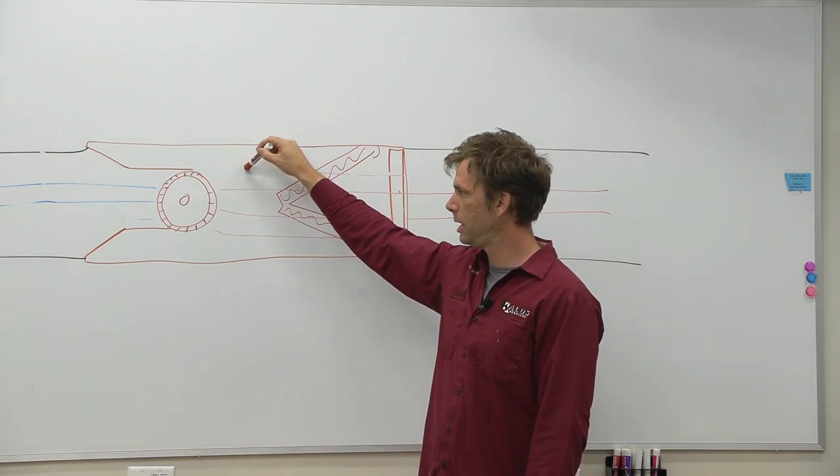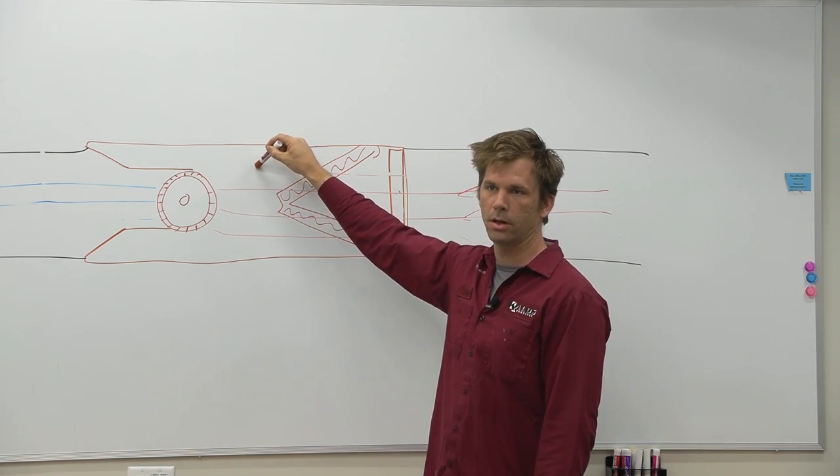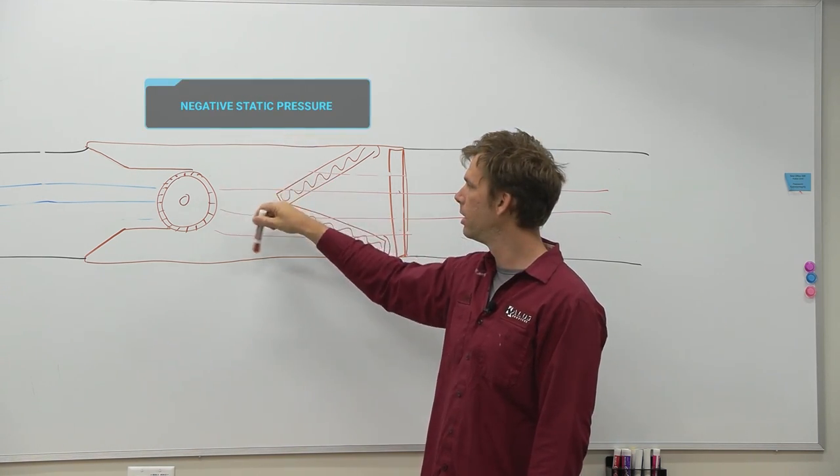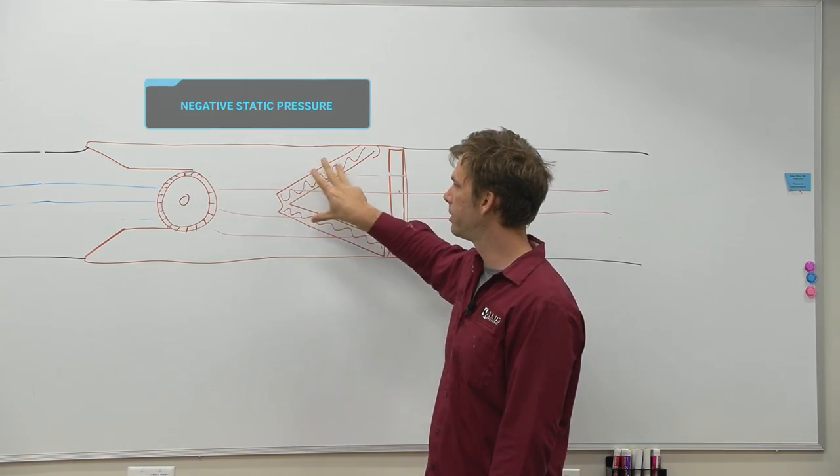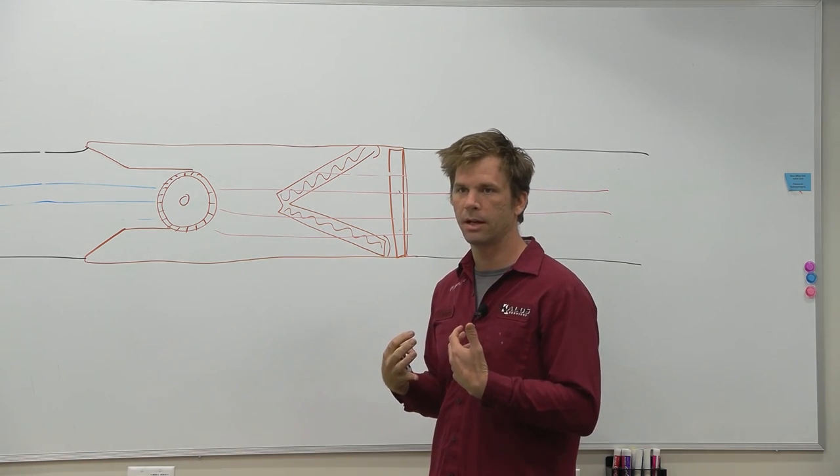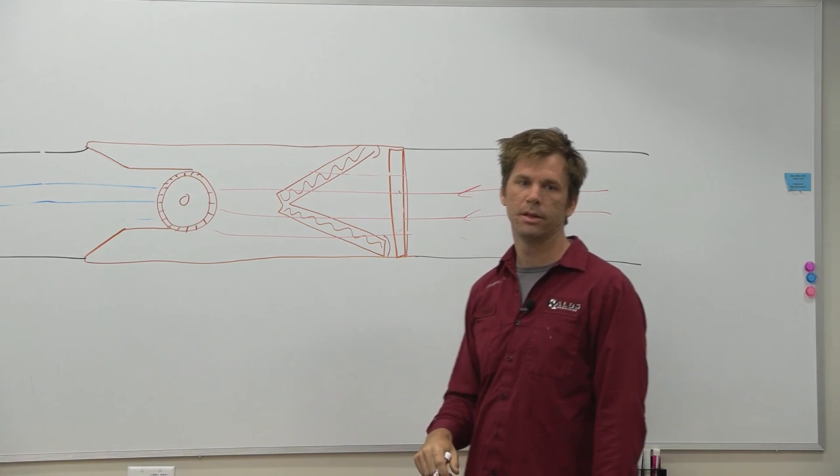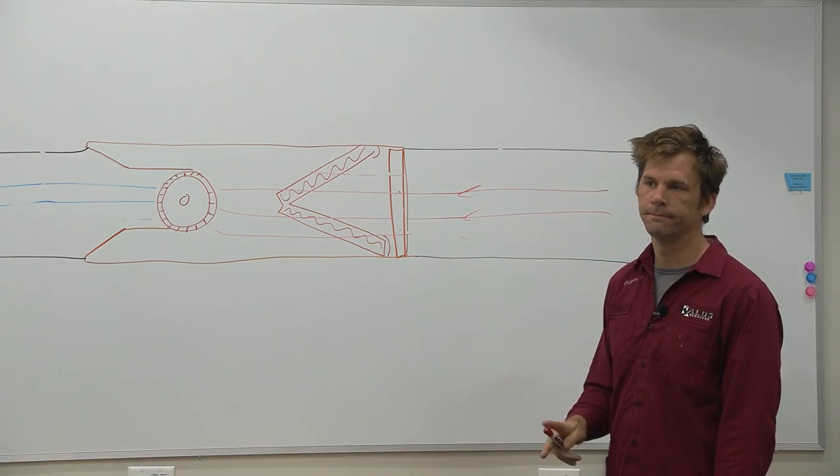We're going to have a big drop across our coil. In here, there's going to be a much stronger vacuum. We'll have a negative static pressure in here above the coil. The blower's trying to pull, it's not getting a lot of airflow through there. It'll be a much stronger pull here than if your coil's clean.